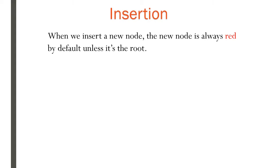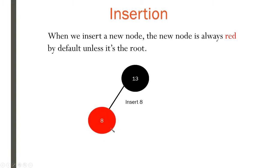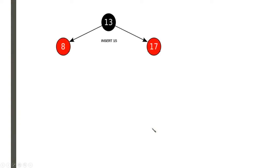Now let's discuss insertion. Every time we insert a new node in a red-black tree, unlike in regular binary trees where we don't care about color, in red-black trees we have to care about color. When we insert a new node, the new node is always red — not black, always red. Say I have a node 13 as the root and I want to insert 8 — 8 will be red. Insert 17 — 17 will be red.